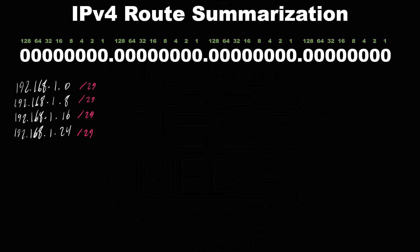Let's say they gave us these four subnets and said we want to do route summarization on them. There are some rules that apply. First, we want to make sure they are in multiples of twos — here we have one, two, three, four, which satisfies that. Another rule is that they must be in continuous format, based on the last bit turned on, which is the network increment.